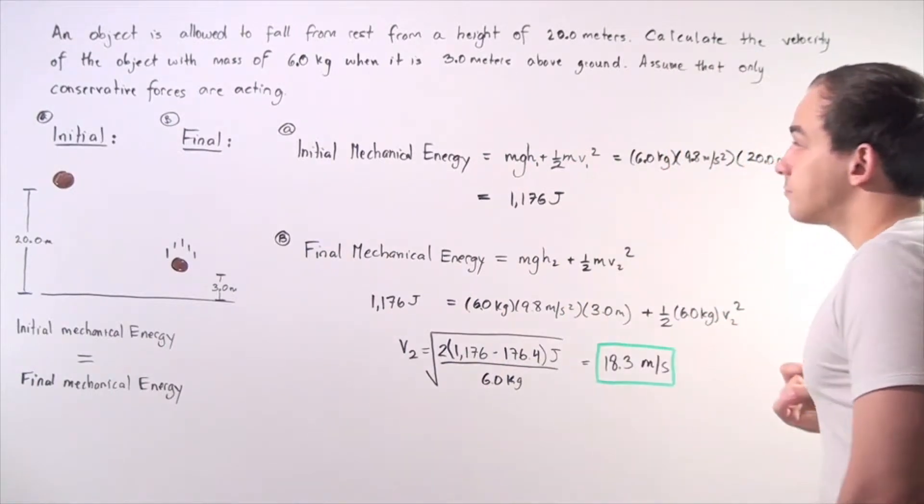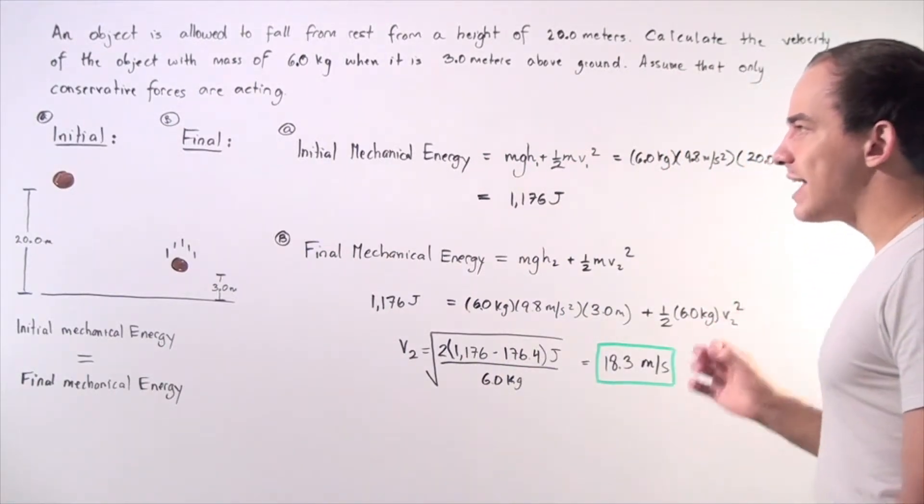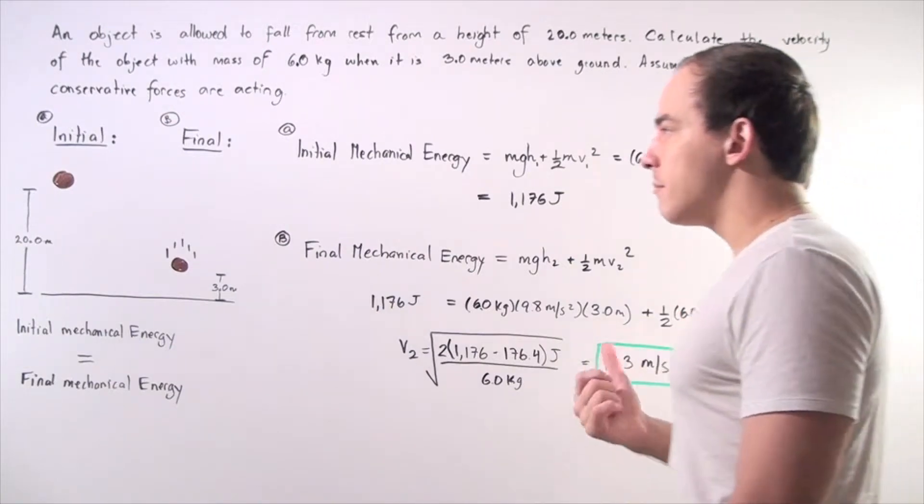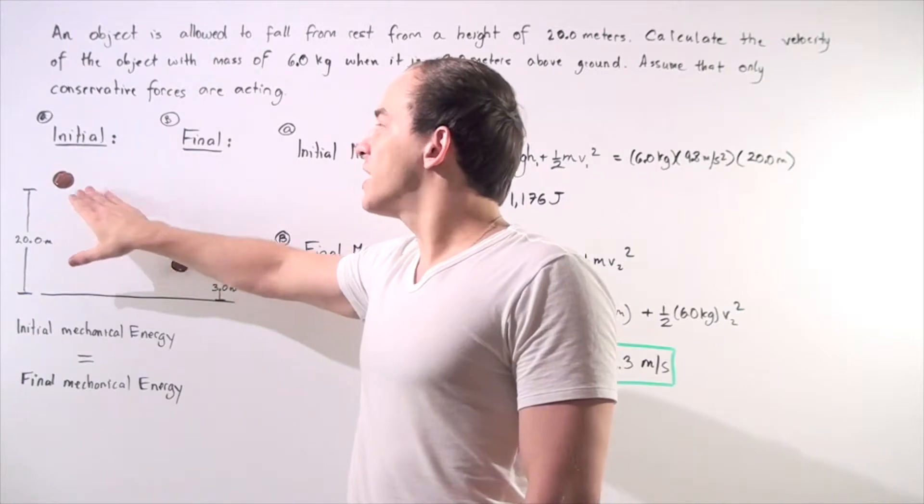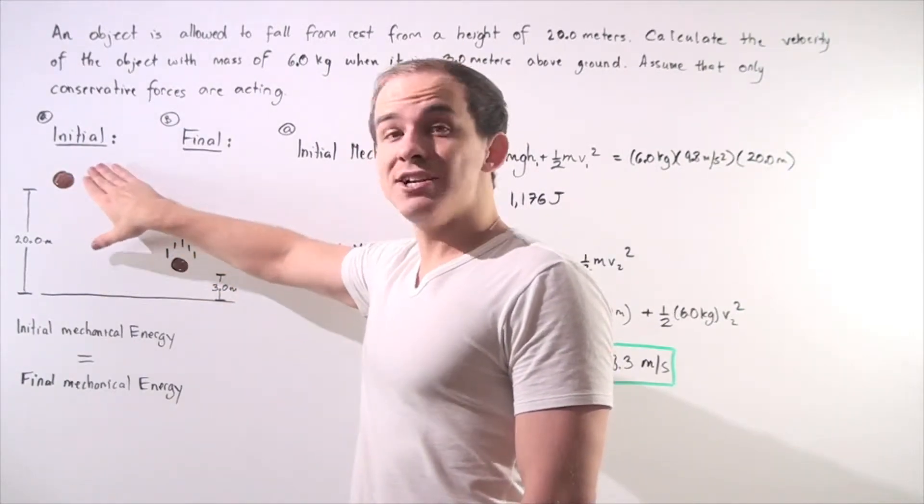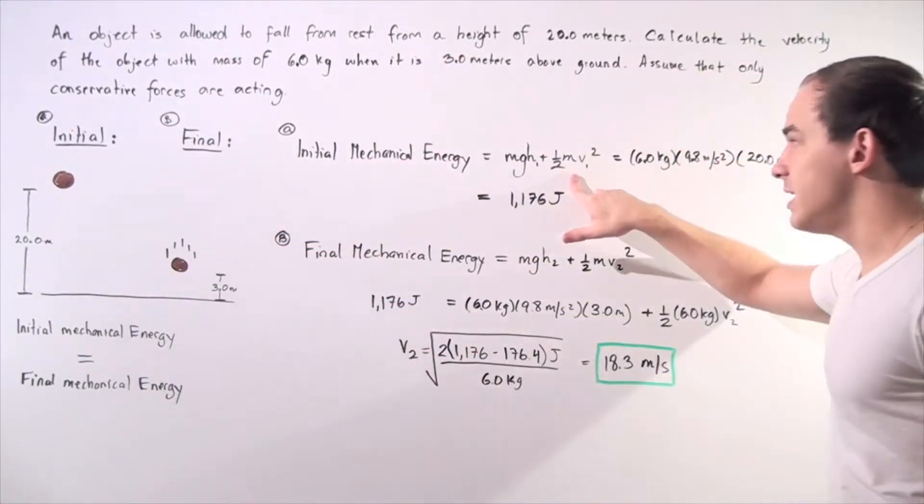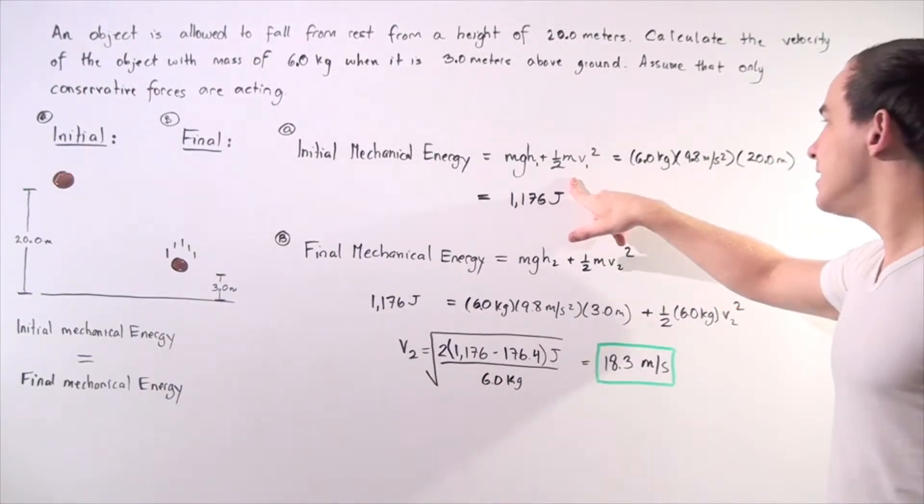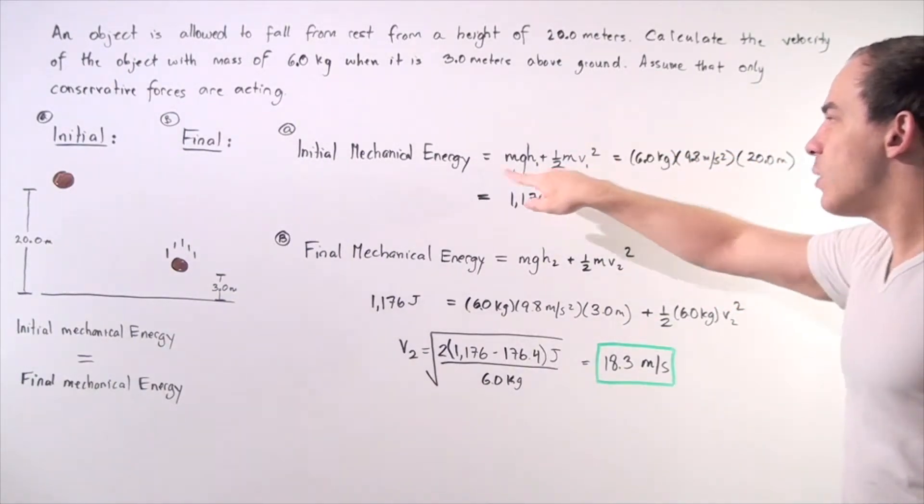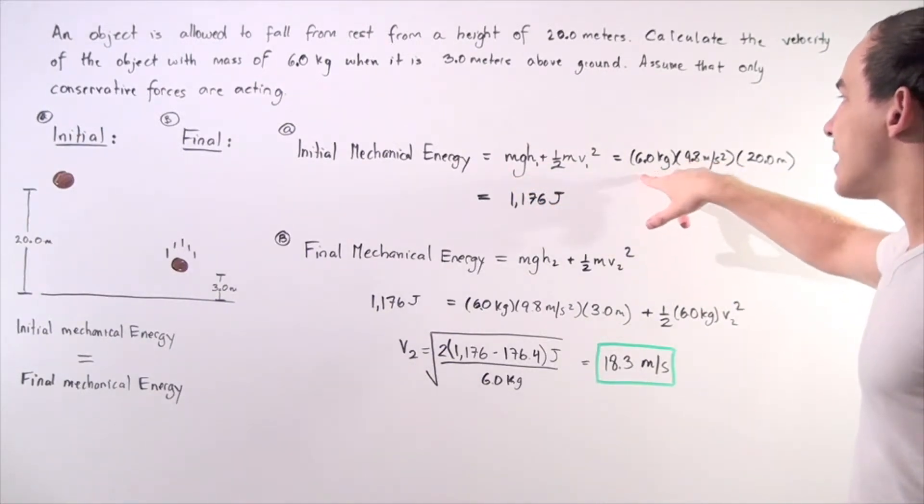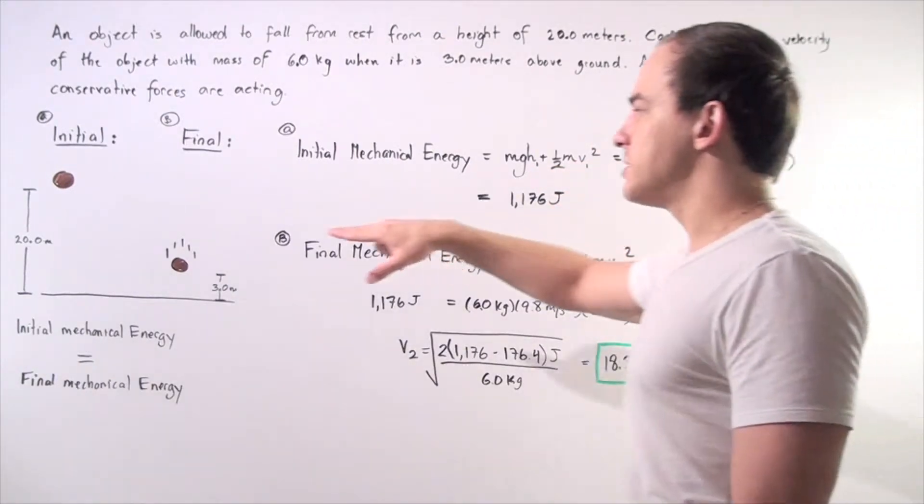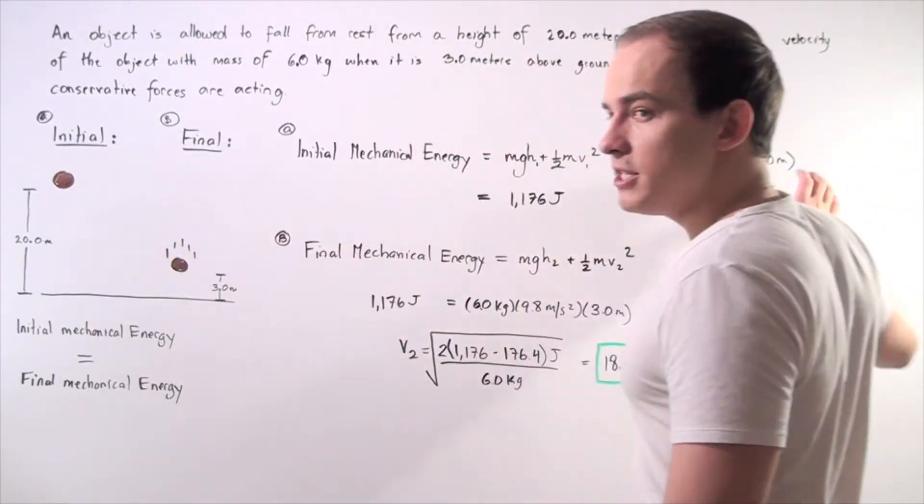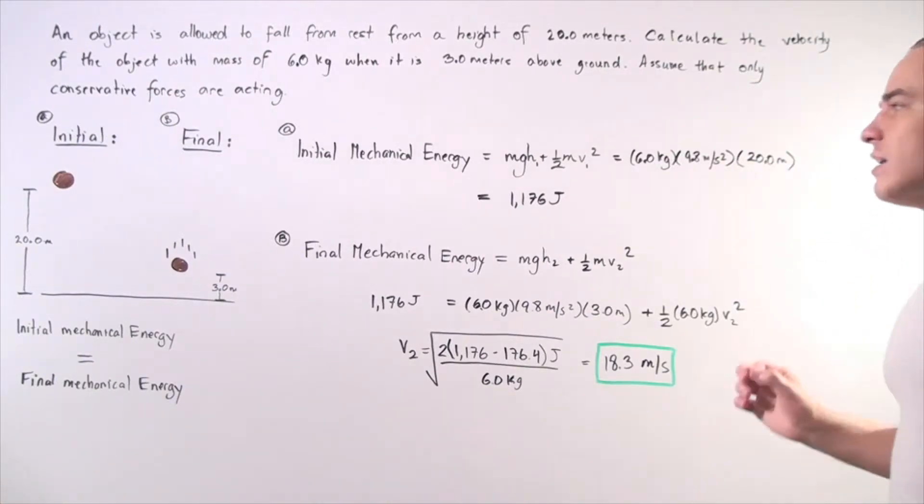Let's begin with part A. The initial mechanical energy of the object is equal to the sum of the kinetic energy and the gravitational potential energy. We know the kinetic energy of the object initially is 0 because our velocity V1 is 0, so this term goes to 0. Now mgh is simply our mass 6 kilograms, g 9.8 meters per second squared, and h1 is 20 meters above the ground.